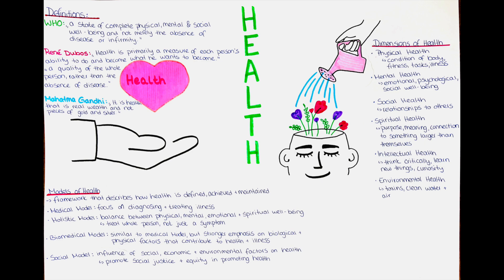The medical model places a strong emphasis on biological and physical factors that contribute to health and illness. The holistic model of health takes a more comprehensive approach and considers the physical, mental, emotional and spiritual aspects of a person's well-being. It views health as a balance between these different aspects and emphasizes the importance of treating the whole person rather than just their symptoms. The holistic model also recognizes the importance of lifestyle factors, such as nutrition, exercise and stress management, in promoting overall health and well-being.